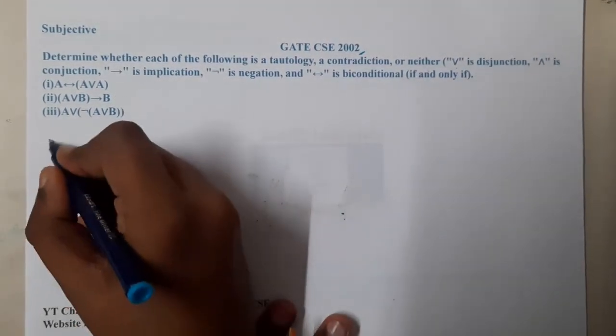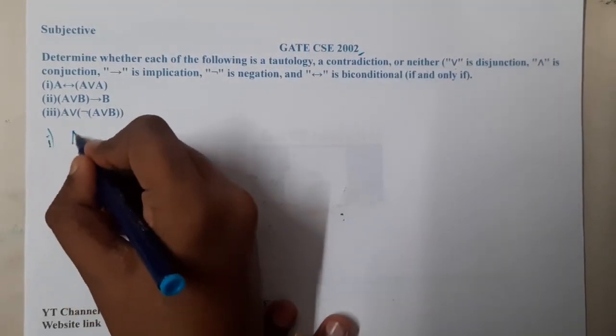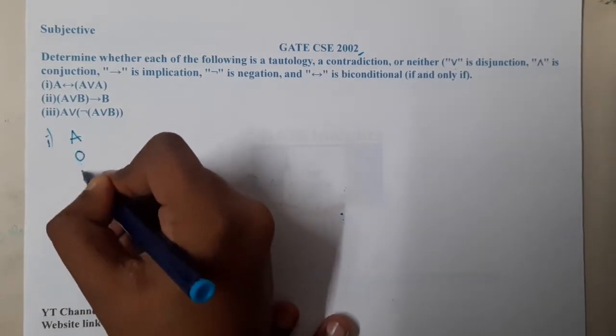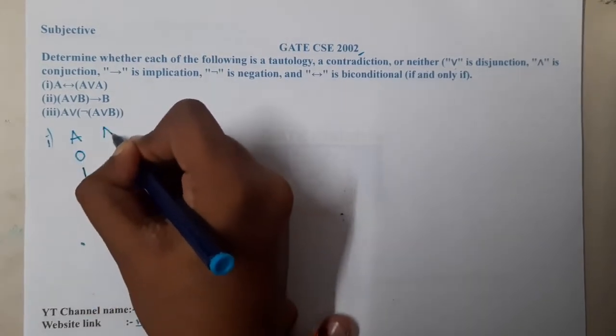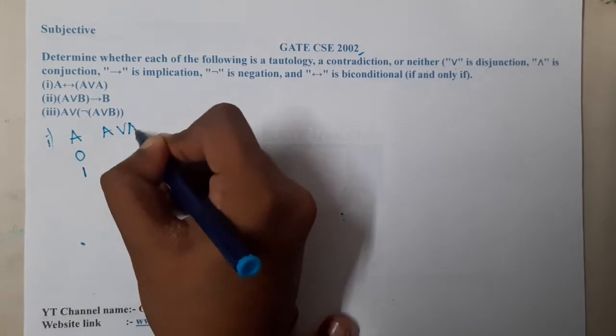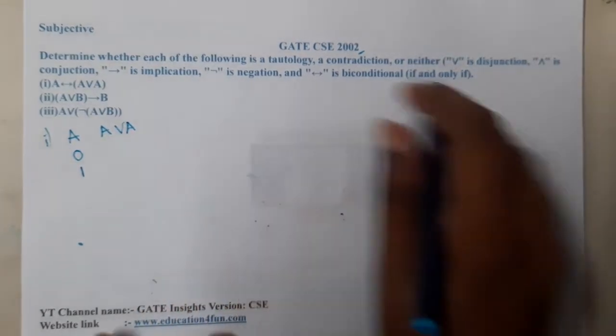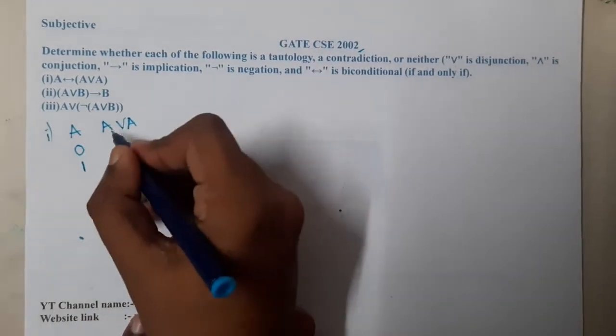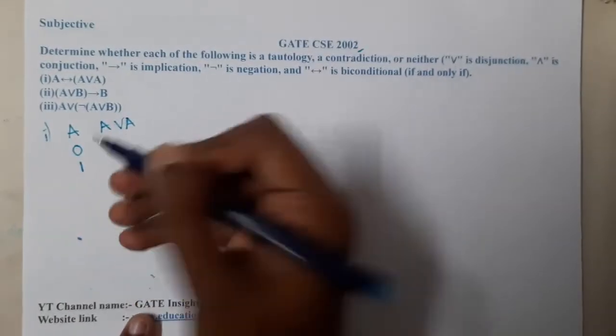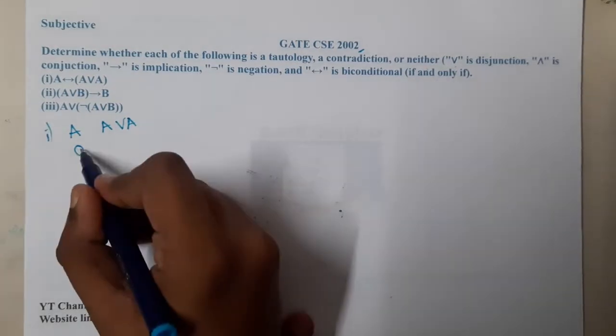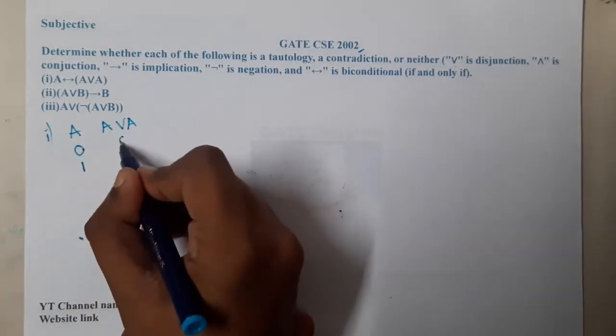The first part is really interesting. There is only a single variable, so the values could be zero or one. If I apply OR operation between A and A, if I perform A or A, I will get A only. If I perform zero with zero, I will get zero. One with one, I will get one.